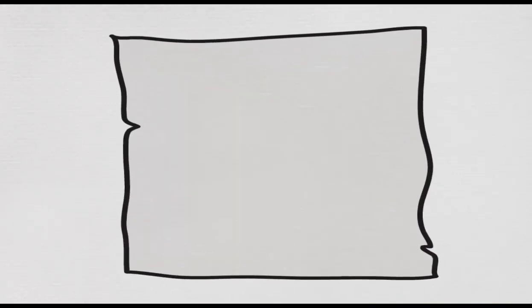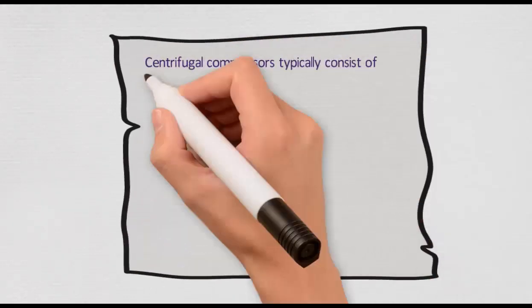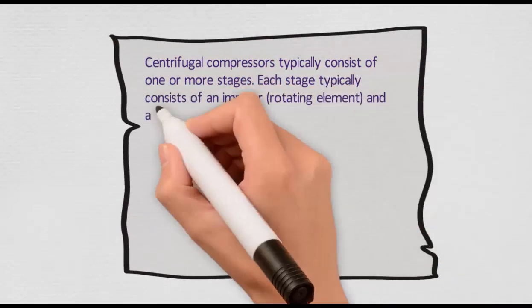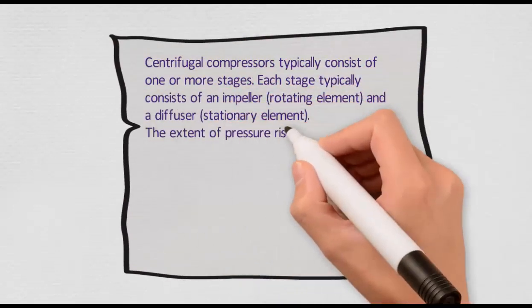Centrifugal compressors typically consist of one or more stages. Each stage typically consists of an impeller and a diffuser.